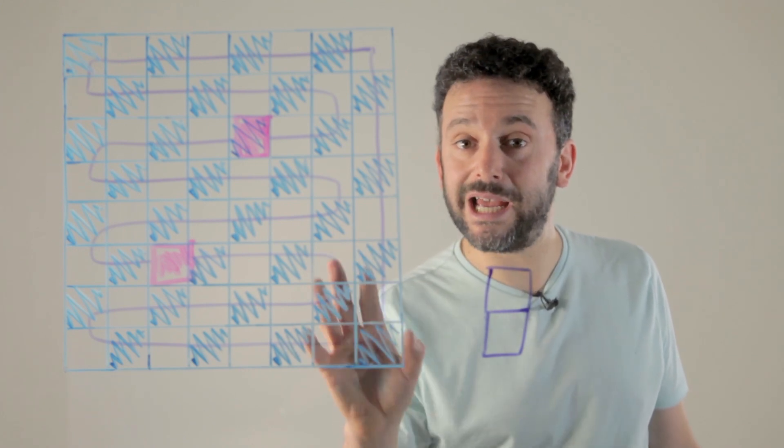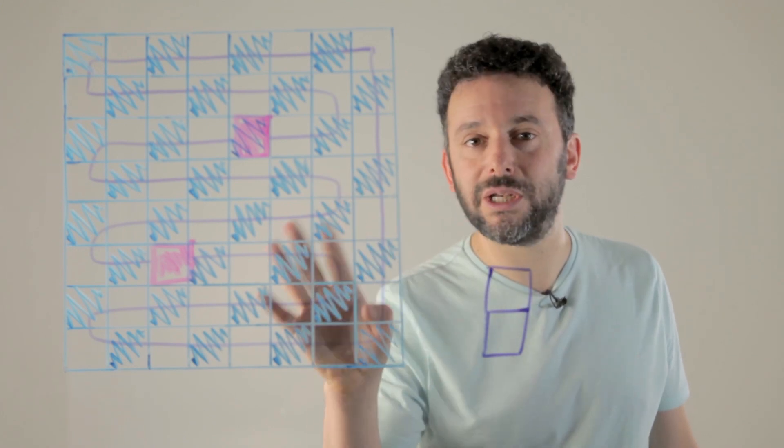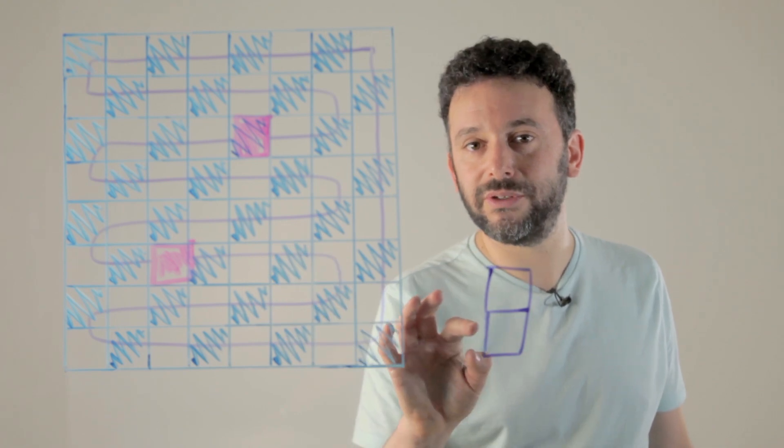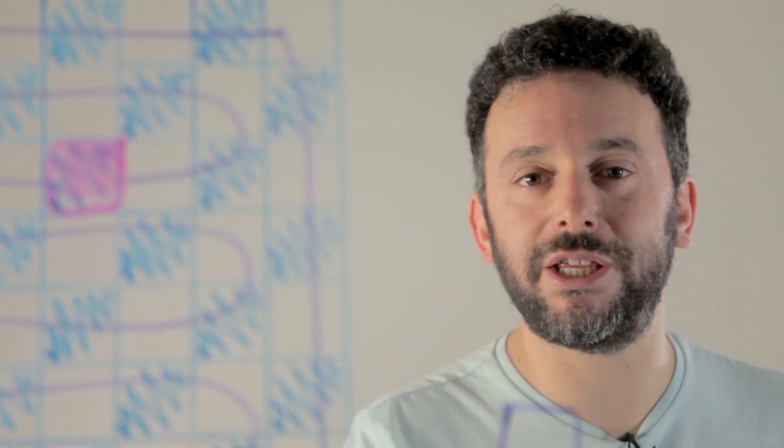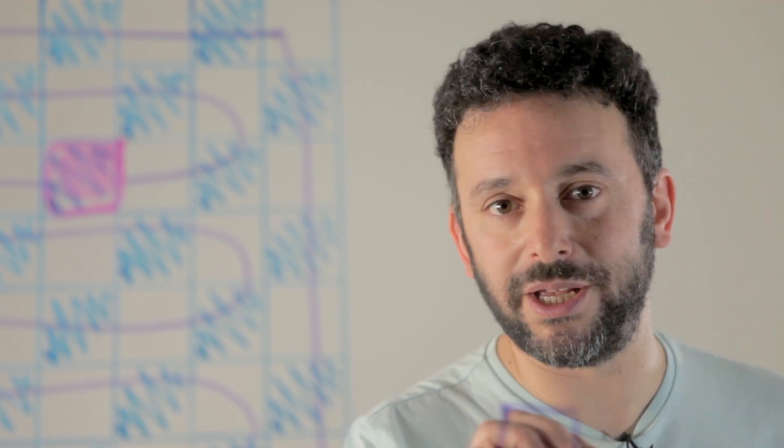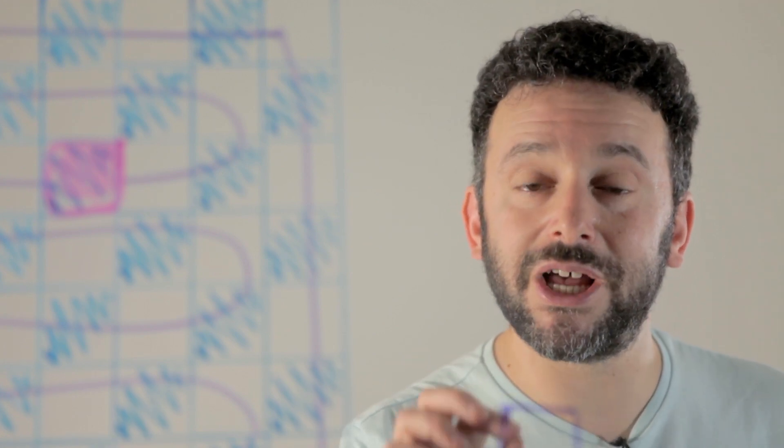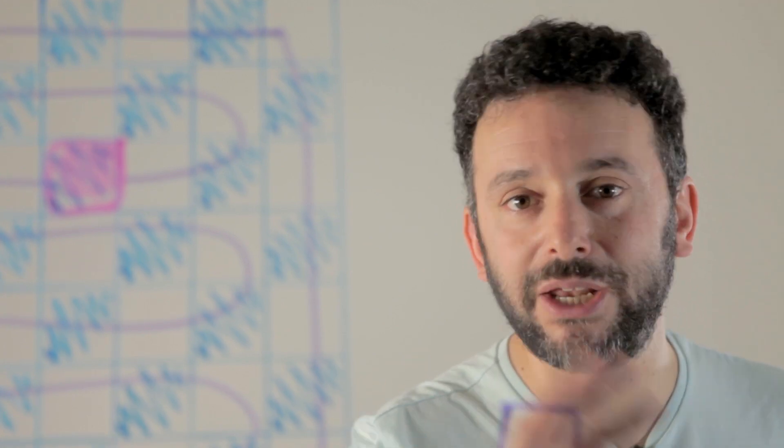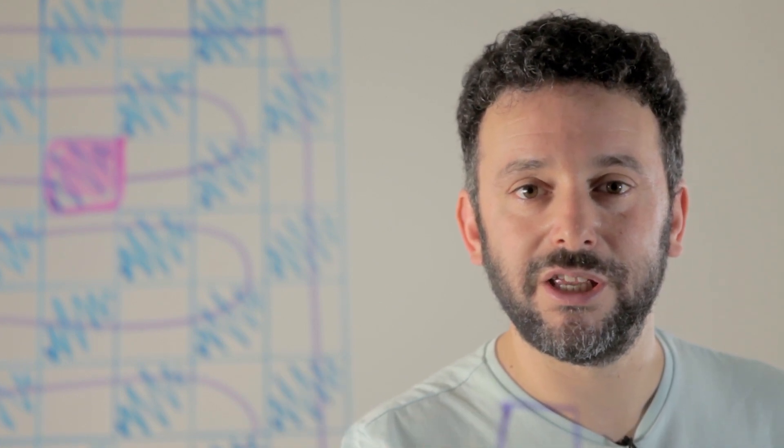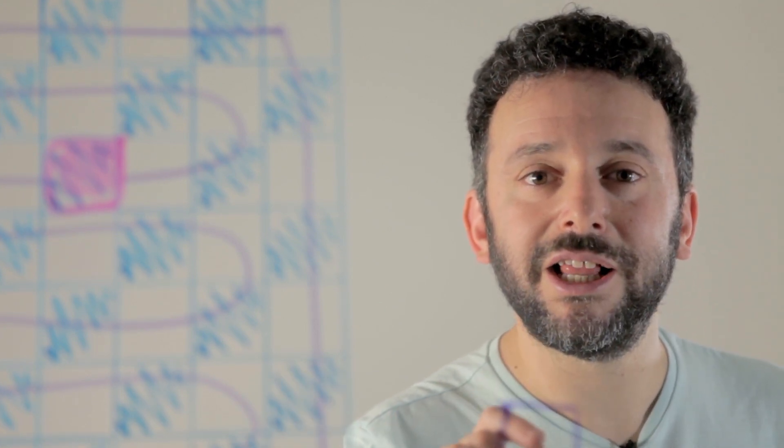So we can cover this type of mutilated chessboard with dominoes. So the moral is this, if you want to mutilate your chessboard by cutting out two squares, if both of those squares are the same color you cannot cover it with dominoes. But if they are one of each color then you can.